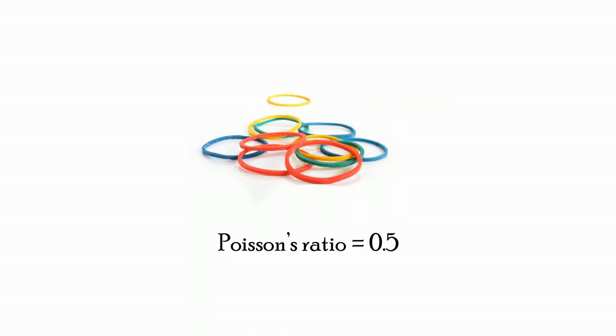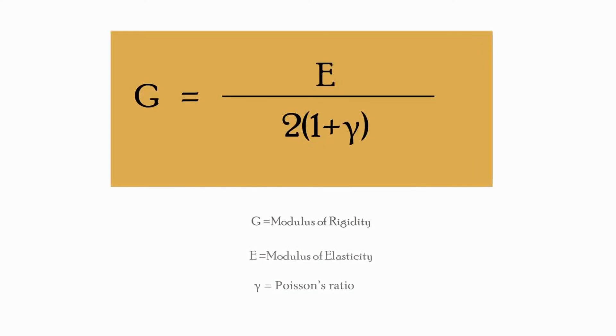We have the relation to calculate the Young's modulus, shear modulus, and Poisson's ratio. G equals the Young's modulus divided by twice of 1 plus gamma, where gamma is Poisson's ratio.